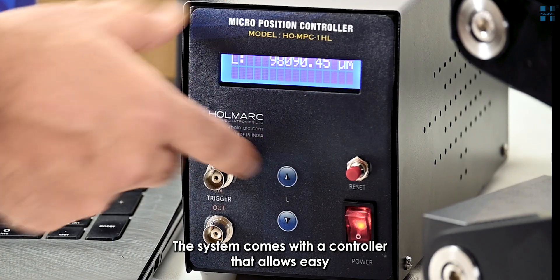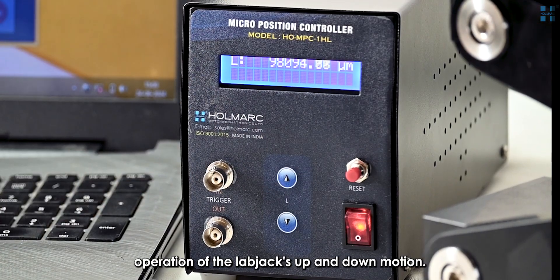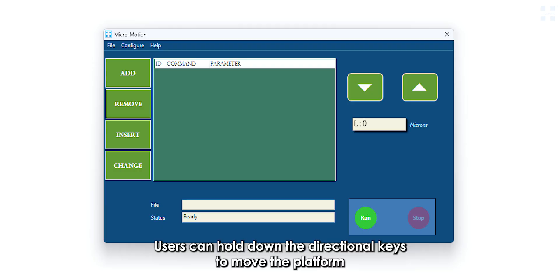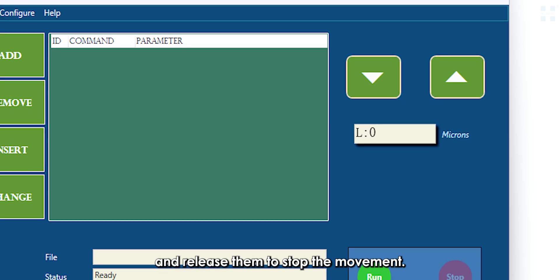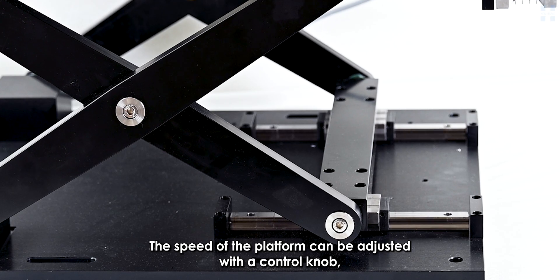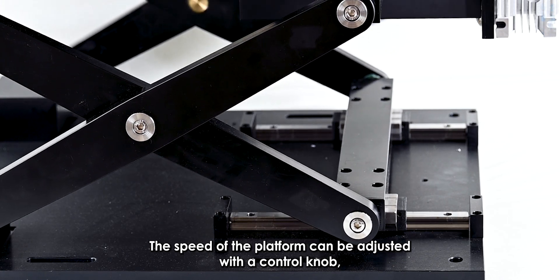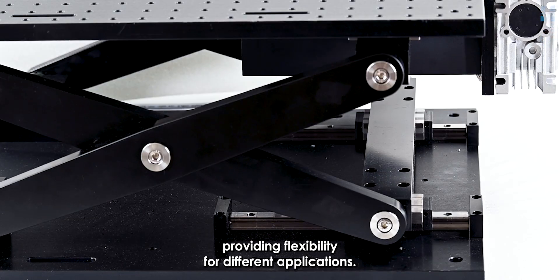The system comes with a controller that allows easy operation of the lab jack's up and down motion. Users can hold down the directional keys to move the platform and release them to stop the movement. The speed of the platform can be adjusted with a control knob, providing flexibility for different applications.